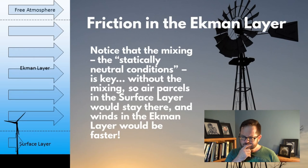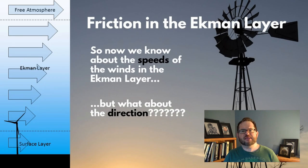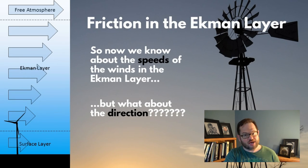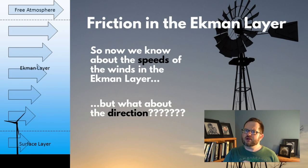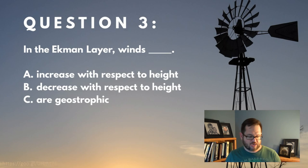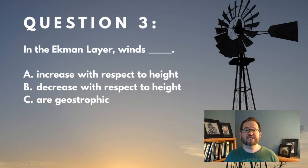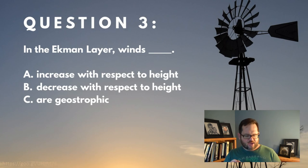This discussion gave us a powerful way to know about the speeds of the wind at different heights in the Ekman layer. For wind power, mostly what we care about is the speed, since the turbine will just pivot to face upwind. But we also need to understand wind direction, which we'll cover in part three of this lecture. First, let's answer a quick question: In the Ekman layer under statically neutral conditions, winds — A) increase with respect to height, B) decrease with respect to height, or C) are geostrophic?